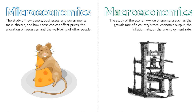Macroeconomics, on the other hand, is the study of economy-wide phenomena, such as the growth rate of a country's total economic output, the inflation rate, or the unemployment rate. Economic growth — that is, the increase in per capita production and consumption — didn't start until the 1800s, and with our newfound wealth came a cycle of booms and busts that impact the fortunes of everyone. Macroeconomists focus on those issues. Microeconomics is timeless — it's about where our incentives come from and how we respond to them.